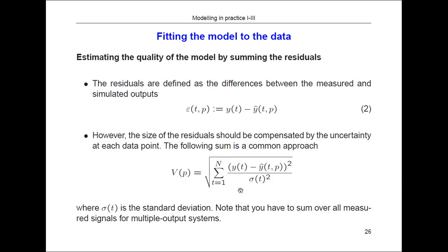The basic principle for finding those parameters is to focus on the residuals. The residuals are the difference between the measured and the simulated output. For a specific time point we have a specific residual ε. These residuals simply say how far away you are from being able to go through the data points.